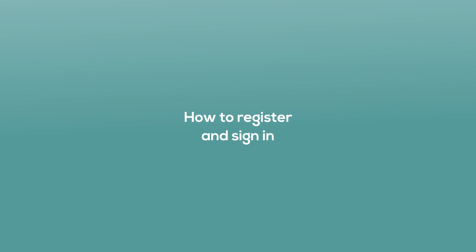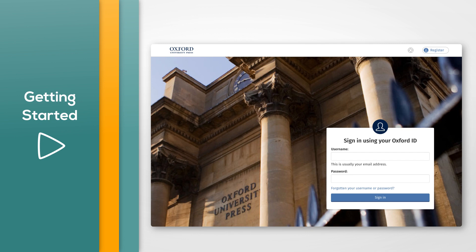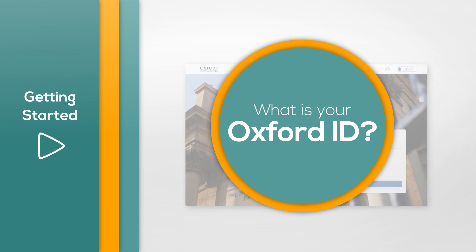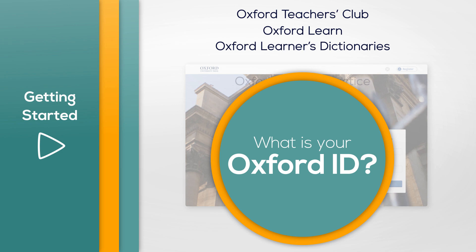How to register and sign in. Sign into Oxford Learners Bookshelf using your Oxford ID username and password. Oxford ID is the name of the account that you use to access your Oxford University Press materials, such as the Oxford Teachers Club, Oxford Learn, Oxford Learners Dictionaries, and Oxford Online Practice.